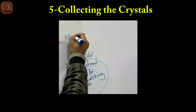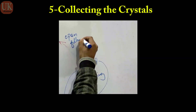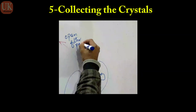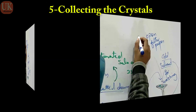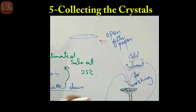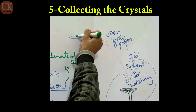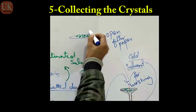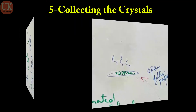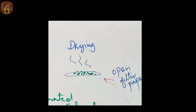Solvent jo crystals mein maujood hai wo evaporate ki ja sakti hai — agar hum ise kisi oven mein, kisi hot place par, ya sun ki roshni mein rakh dein, lekin ye depends karta hai ke wo crystals ko nuqsaan na pahunchaye. Is tarah mother liquor ko evaporate karke crystals ko dry karna bhi ek step hai jo crystallization ke poore process mein shamil hai — ise drying of crystallized substance kehte hain.